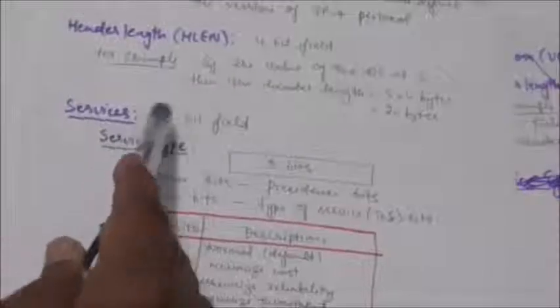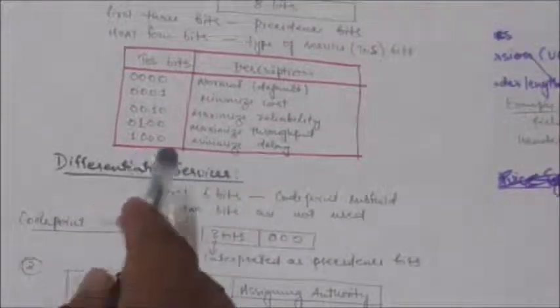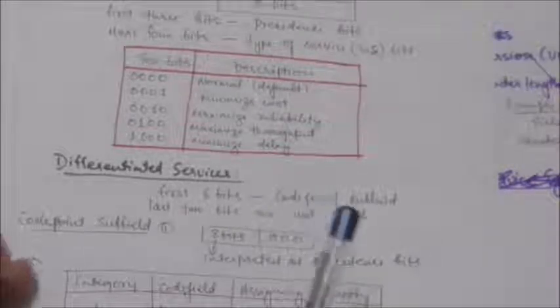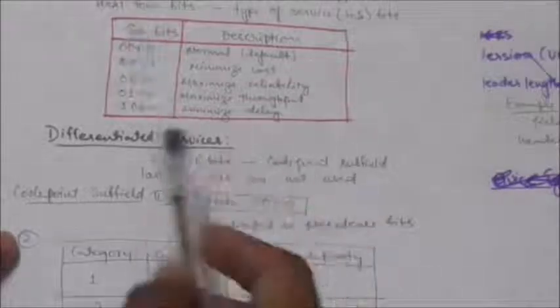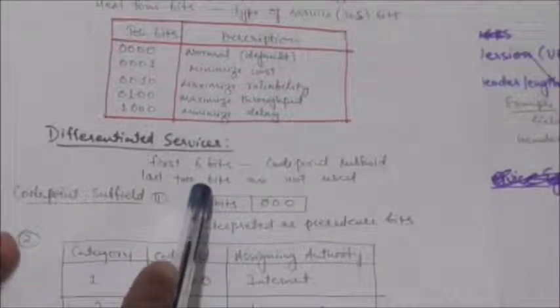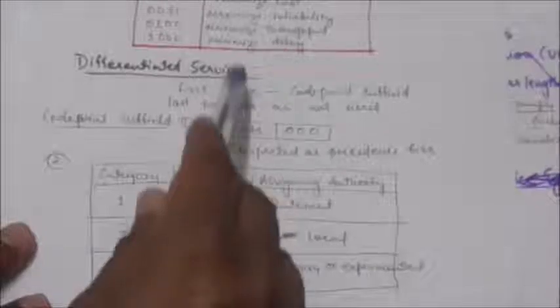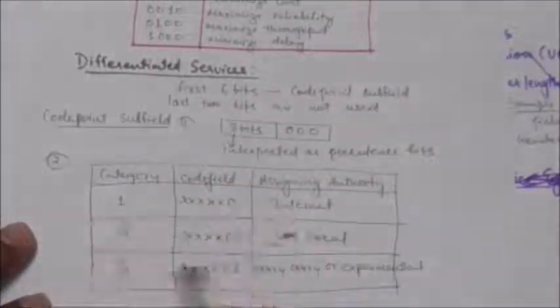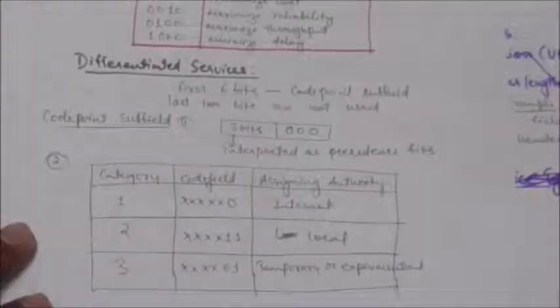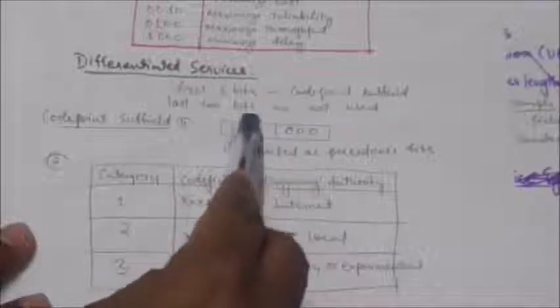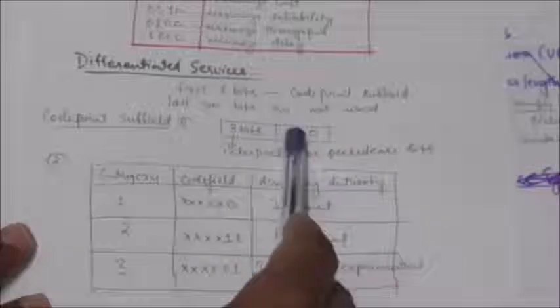Now in the Differentiated Services interpretation, the first 6 bits make up the code point subfield, and the last 2 bits are not used. The code point subfield can be used in two different ways.